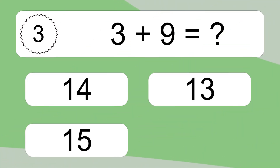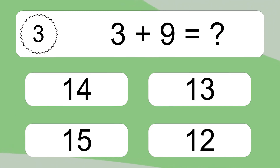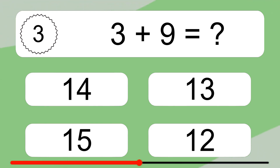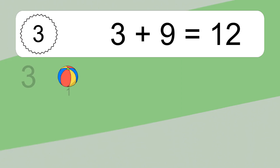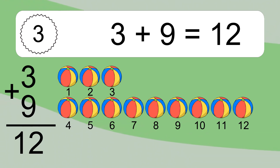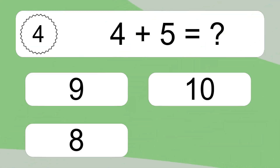3 plus 9 equals what? 3 plus 9 equals 12. Let's count it: 1, 2, 3, 4, 5, 6, 7, 8, 9, 10, 11, 12. 4 plus 5 equals what?